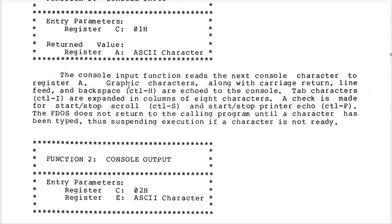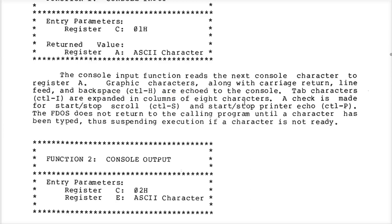Notice that it says not only does it read the next character and put it in the accumulator, it says that graphic characters along with carriage return, line feed, and backspace are all going to be echoed back to the console. Tab characters are expanded in columns of eight characters. So if you hit a tab, you'll see on the console it'll move over eight characters — the BDOS did that, not the terminal.